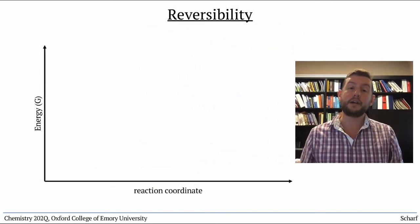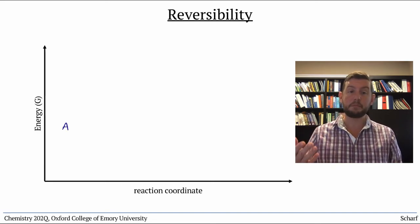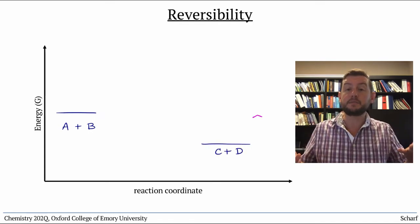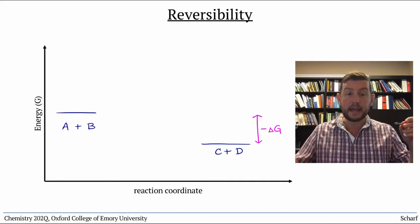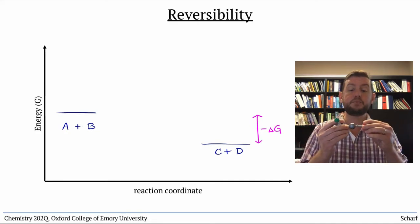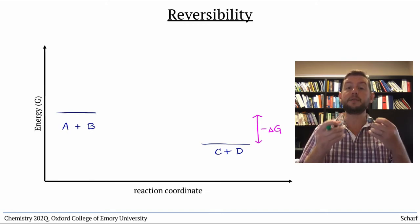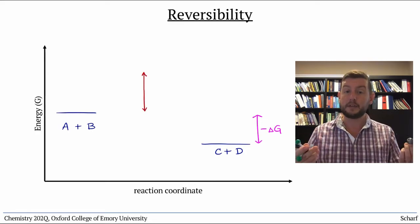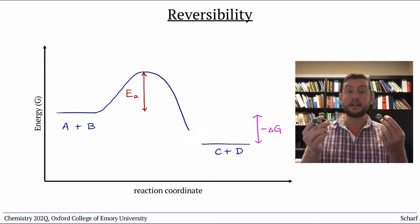Reaction coordinate diagrams can be used to help us understand this. Imagine that we have a forward reaction, A plus B goes to C plus D, and let's say it's spontaneous with some negative delta G. As A and B collide, they must do so with sufficient kinetic energy to surmount the activation energy barrier for that forward reaction. If they do so, then the reaction actually occurs, and C and D are formed.